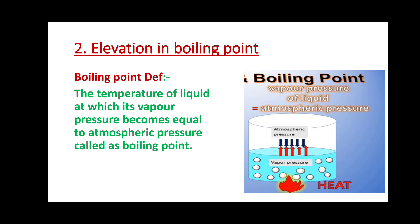The next colligative property is elevation in boiling point. First, the definition of boiling point: the temperature of a liquid at which its vapor pressure becomes equal to atmospheric pressure is called the boiling point. Elevation in boiling point means we have to increase the boiling point by adding non-volatile solutes.